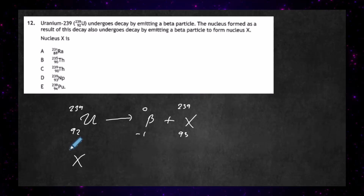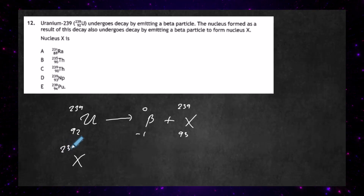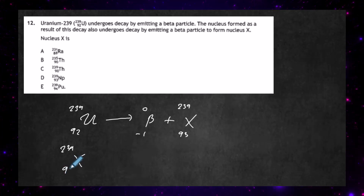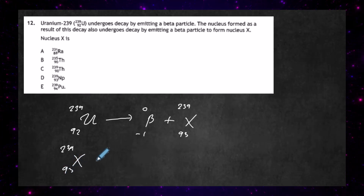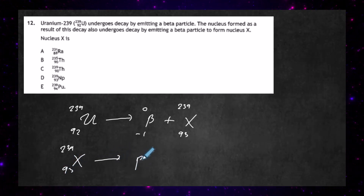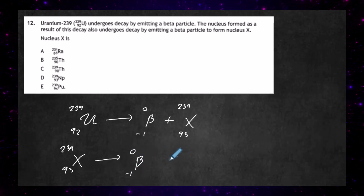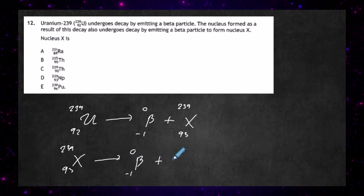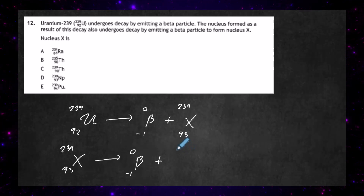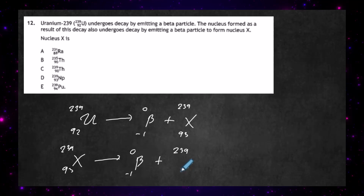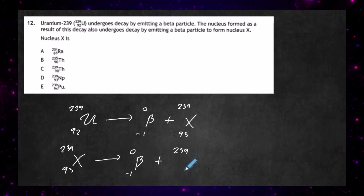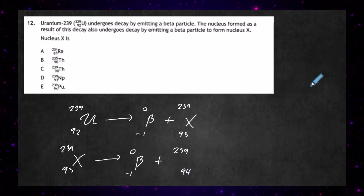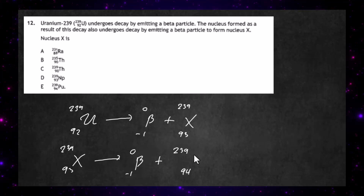That same nucleus — 239, atomic number 93 — also emits a beta particle (beta minus, zero minus one). Again, when a nucleus emits a beta particle, the mass number remains unchanged at 239, but the atomic number increases by one again to give 94.